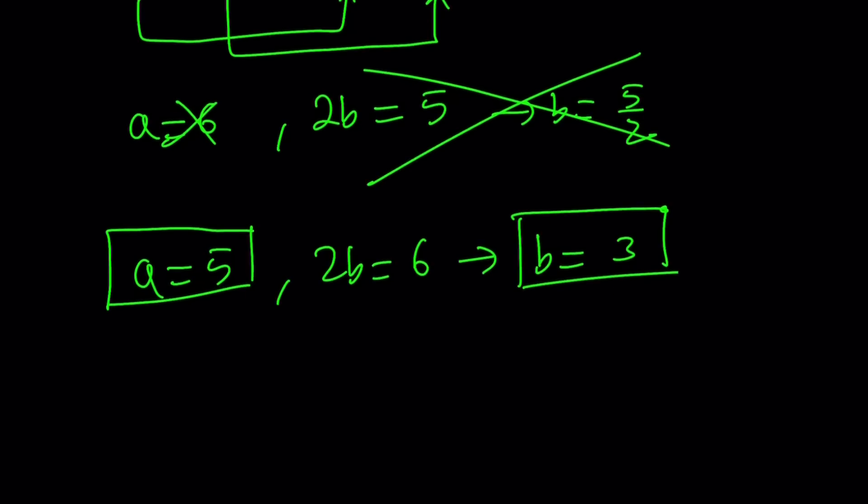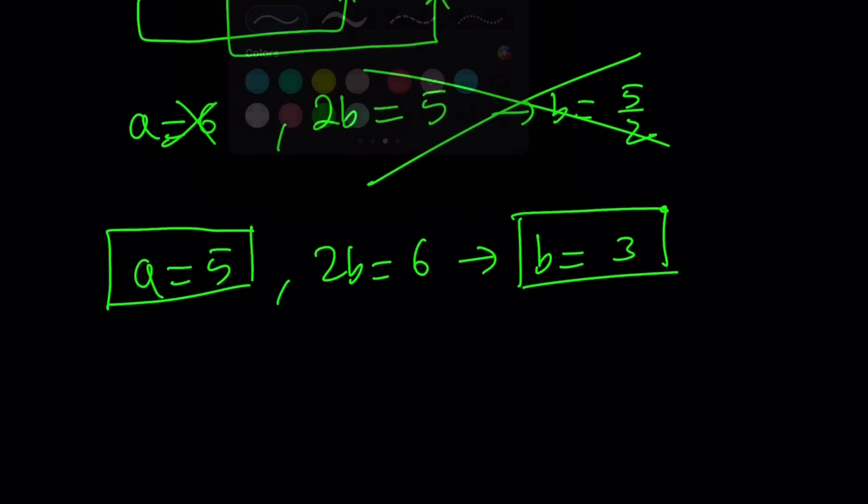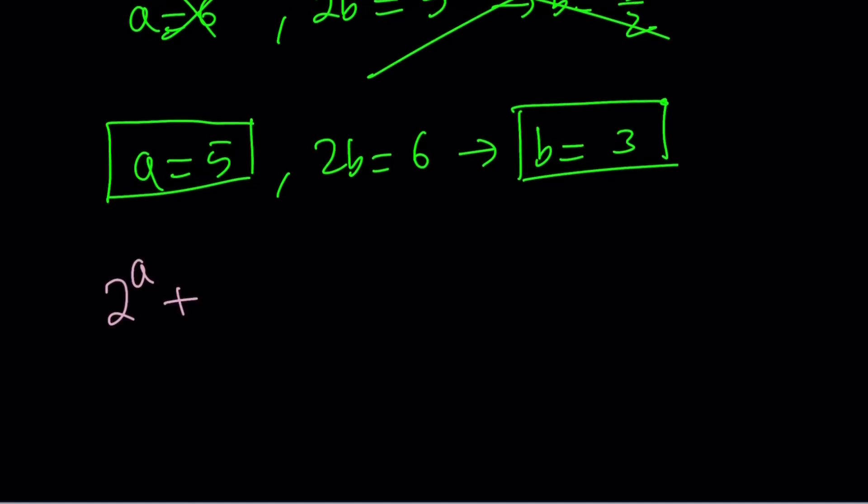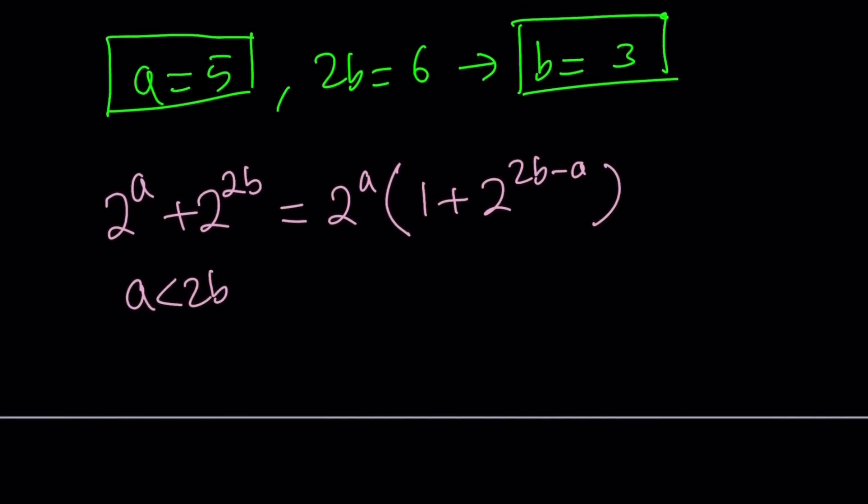You could also consider the following. Looking at it from another perspective, consider 2 to the power a plus 2 to the power 2b can be factored. So suppose a is less than 2b. So a is the smaller power. Take out 2 to the a. This is going to give you 1 plus 2 to the power 2b minus a. There was another Olympiad problem that we've done a while ago. It works with the same principle. So if you're looking at sum of 2 powers of 2 or difference of 2 powers of 2, it would be helpful to factor the expression.